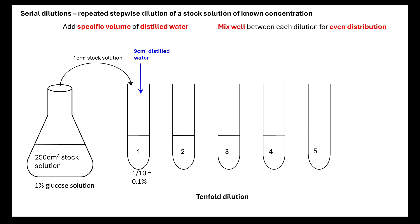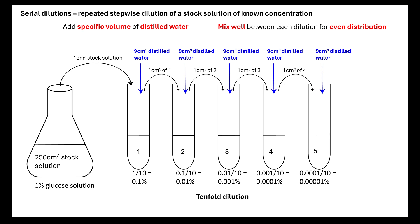I'm going to repeat this, but before I repeat it, I'm going to mix well between each dilution for even distribution. Every time I'm going to add 1 centimeter cubed and 9 centimeter cubed of distilled water. With each time, what I am doing is a 10-fold dilution. I'm taking my 1% glucose solution and doing a 10-fold dilution. I've gone from 1 to 0.1 to 0.01 to 0.001. I'm going to keep doing that until I've got the known concentrations that I would like. That's how we do a serial dilution: repeating these steps each time, adding a specific volume of distilled water to stock solution so that we can get known concentrations.